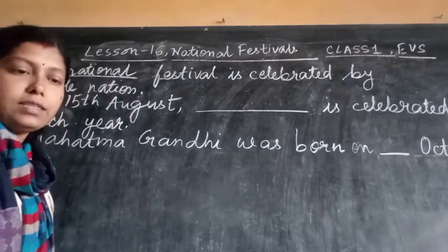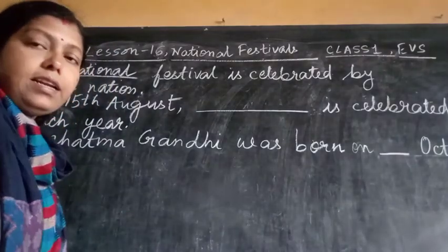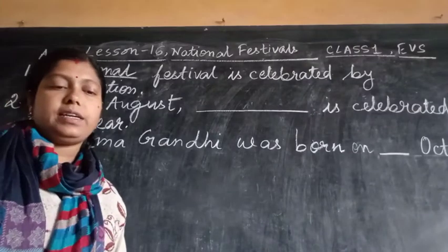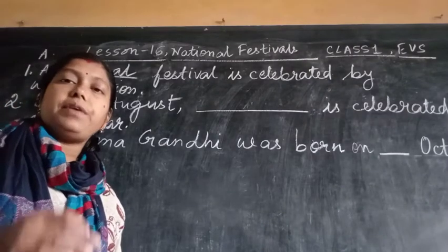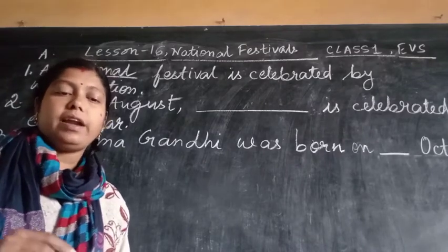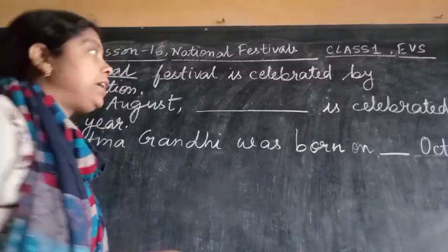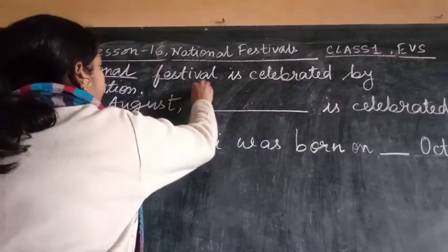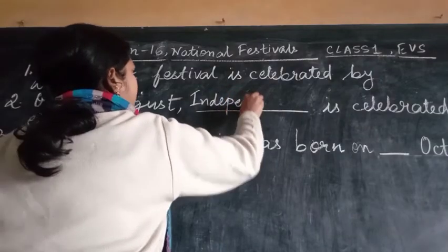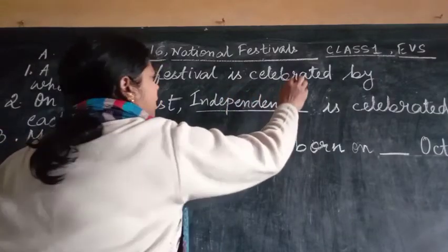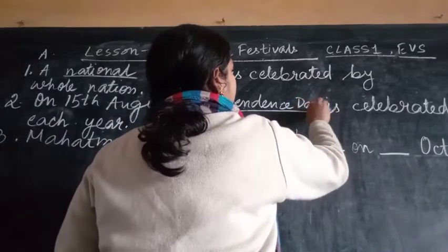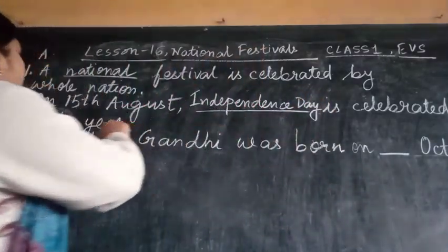Please see, I will write down the answers. Second number — on 15th August, blank is celebrated each year. Options given are Gandhi Jayanti, Republic Day, and Independence Day. On 15th August, Independence Day is celebrated each year.